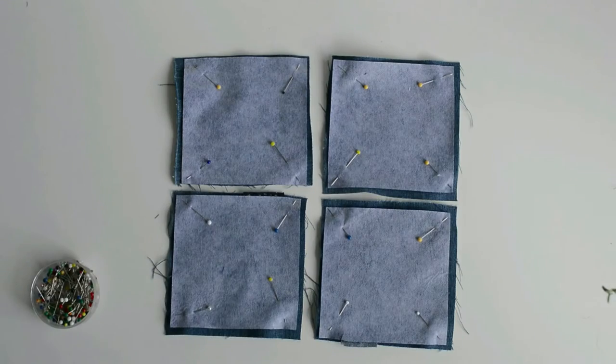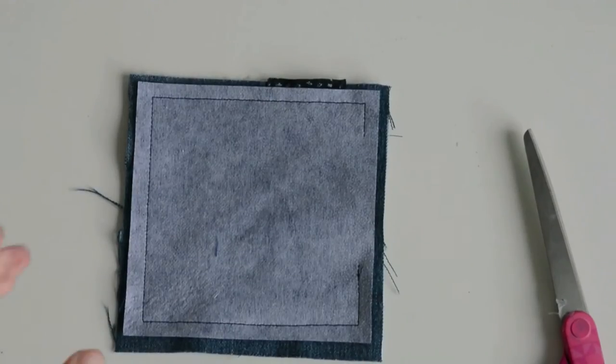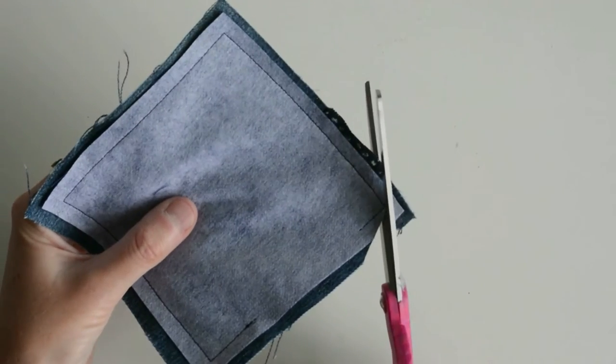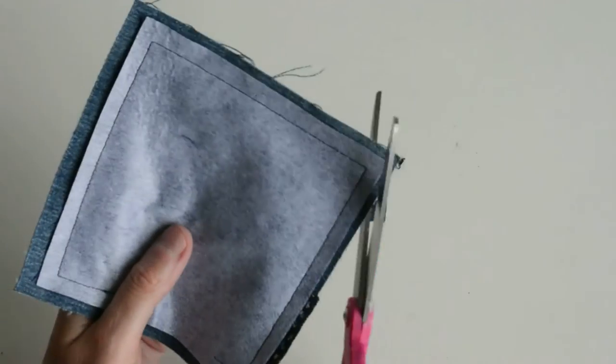You're going to pin all four, and then we're going to machine stitch. You're going to use five eighths of a seam allowance, leaving a large turning gap.